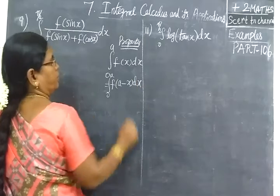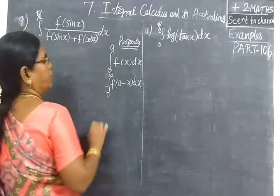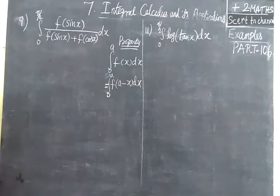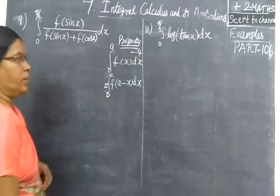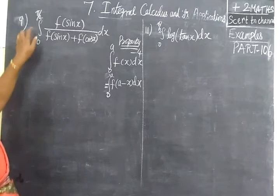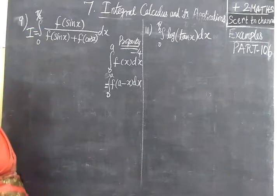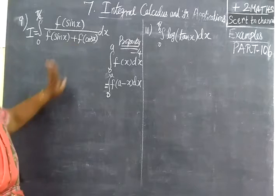The property is integral 0 to A, F of X dx equal to integral 0 to A, F of A minus X dx. By property 4, we can write it. The question itself, we keep it as I. We keep the given question as I.